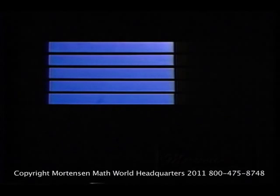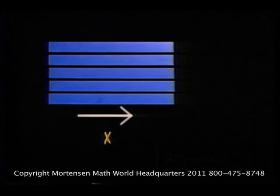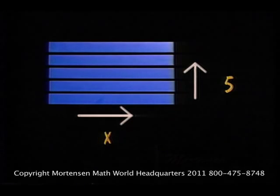Let's count X five times. X over, five up. What do we have? Five X.